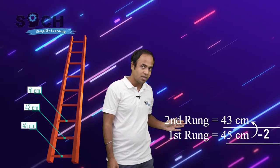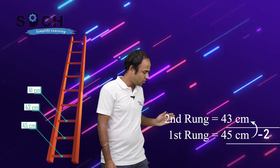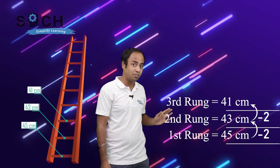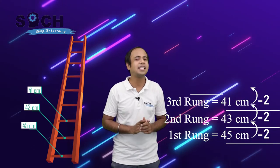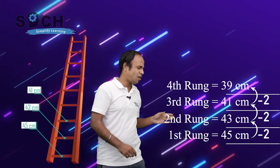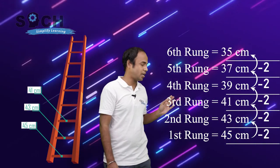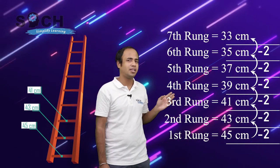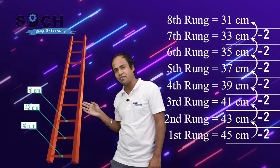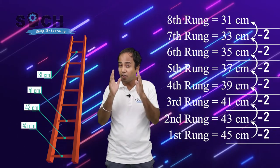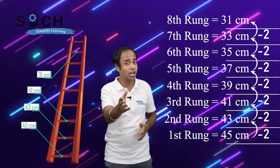So the fourth rung is 39. The fifth is 37. Then 35, then 33, then 31. So from 45 cm at the first rung, going up to the 8th rung, it becomes 31 cm. The rungs of the ladder follow a specific pattern — a specific progression — that is known as Arithmetic Progression.